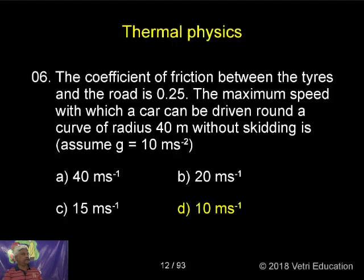The coefficient of friction between the tires and the road is 0.25. The maximum speed with which a car can be driven around a curve of radius 40 meters without skidding.